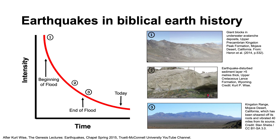One good example being the rootless Kingston range of the Mojave Desert of Eastern California. But there seems to be a general pattern of declining intensity with respect to earthquakes and many other geological processes towards the present day. It's sobering to realise that even the most devastating modern earthquakes are only tiny aftershocks of the almost unimaginably catastrophic processes that occurred during the worldwide flood.